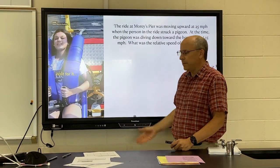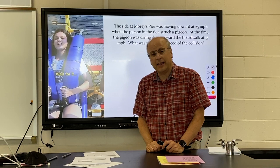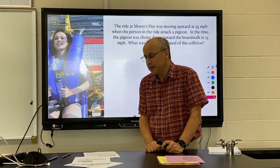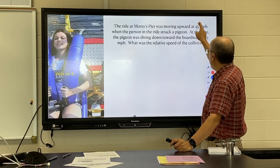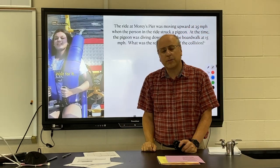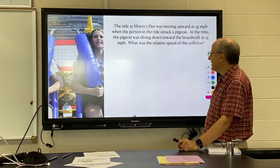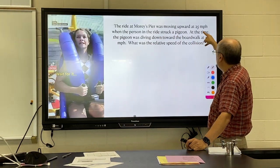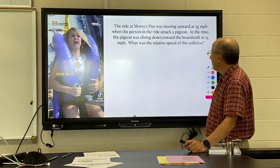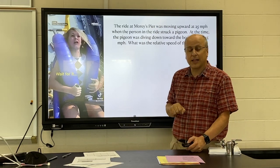Here's an example from the summer. We had these two kids on a ride and they are going to fly headlong into a pigeon. They're moving up at 25 miles per hour and the pigeon is diving down toward the boardwalk at 15. Since it's a head-on collision, we add the two velocities together — in this case, it would be a 40 mile per hour collision.